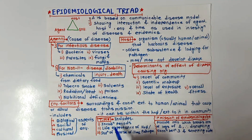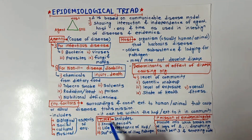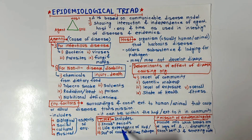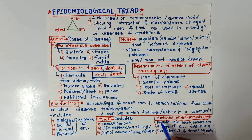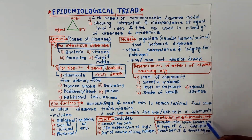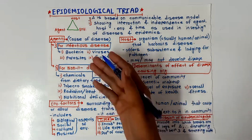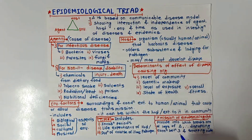Next is time. Time includes incubation periods, life expectancy of the host or pathogen, duration of course of illness, etc. The last point is the primary mission of epidemiology — what is the significance of this epidemiological triad?